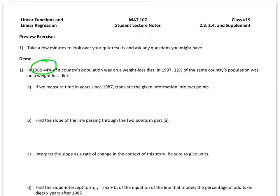I want to translate the given information into two points. So here's one piece of information, and there's another, and I'm going to translate them into points. Measuring time in years since 1987, 1989 would represent two years since 1987. So we're going to have 2, 44, and then my next one, 1997, that's 10 years later, so we have 10, 12.